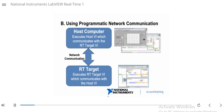Now let's talk about how to use programmatic network communication. On this slide, we see at the bottom our RT target executing an RT VI, where we're programmatically handling communication to the host. The RT VI knows what pieces of data it wants to communicate to the host and programmatically uses something to send those specific pieces of data back up. On your host computer, you execute a host VI — developed separately from your RT VI — which uses programmatic methods to access the data that the RT target is communicating.